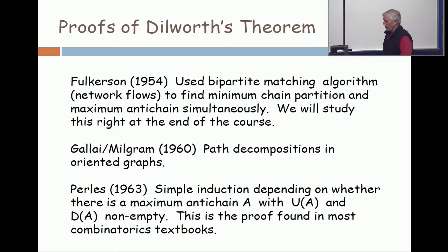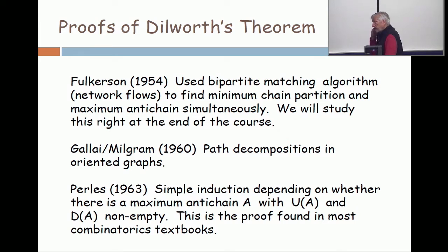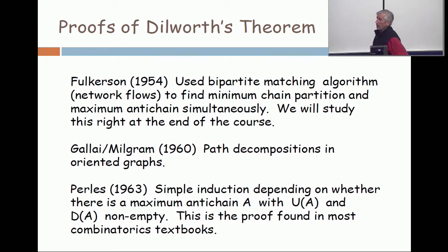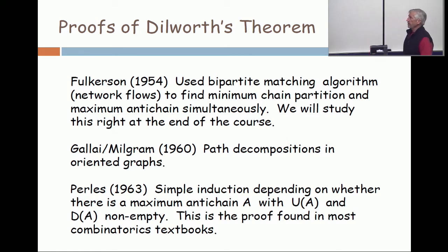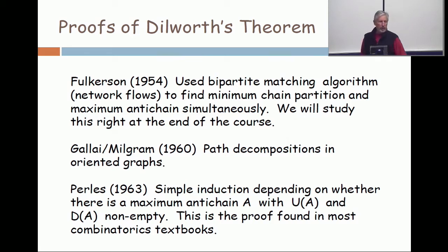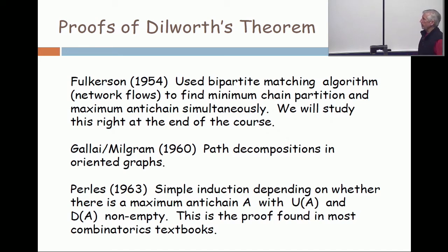Let me make some comments about the proofs of Dilworth's Theorem. Dilworth's paper was published in 1950, and in 1954, a famous combinatorial optimizer named Ray Fulkerson published a short paper showing how to use algorithms from what are called bipartite matching — which we will talk about later in this course. Fulkerson showed how to efficiently find the width and a maximum antichain and a minimum cardinality chain partition at the same time. We're going to do this proof right at the end of this course, but it requires a lot more development.